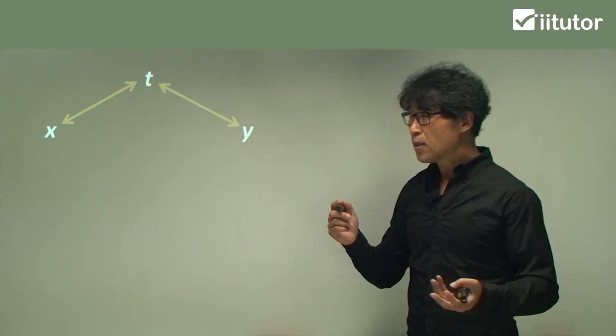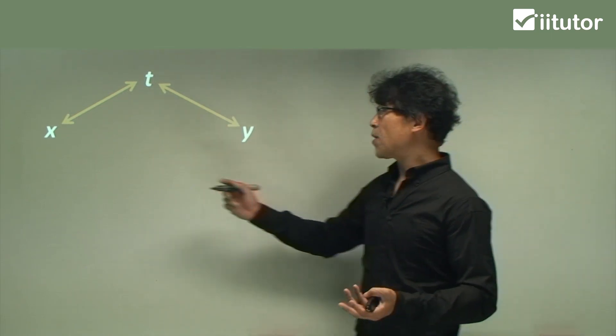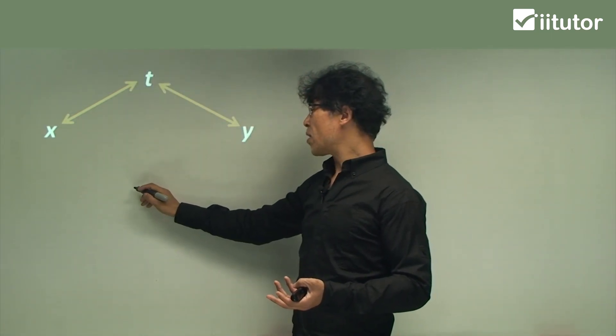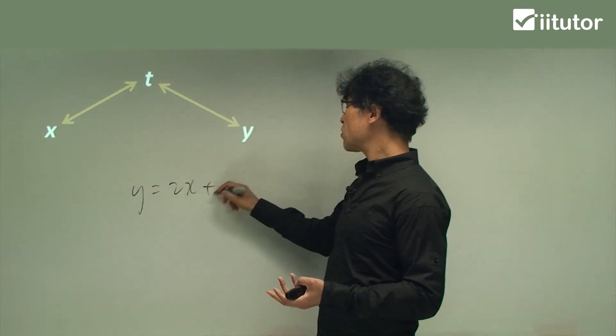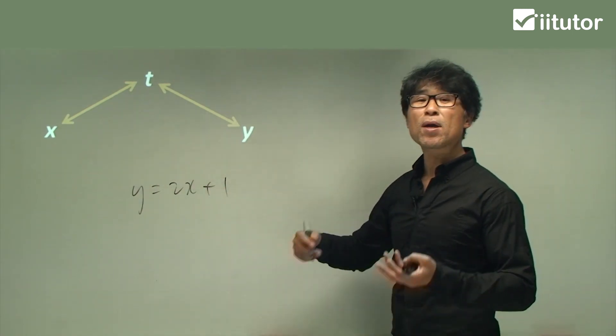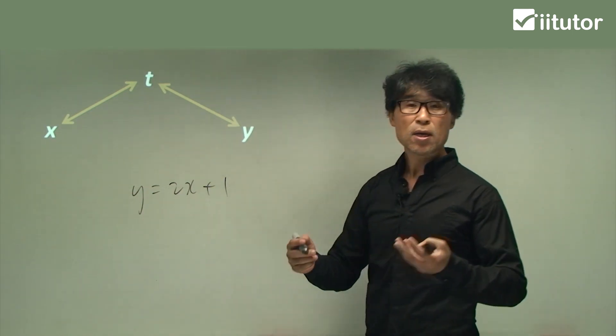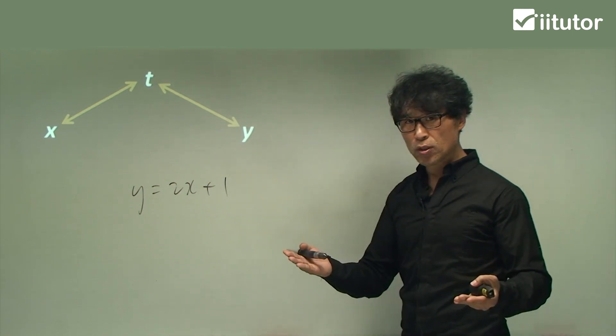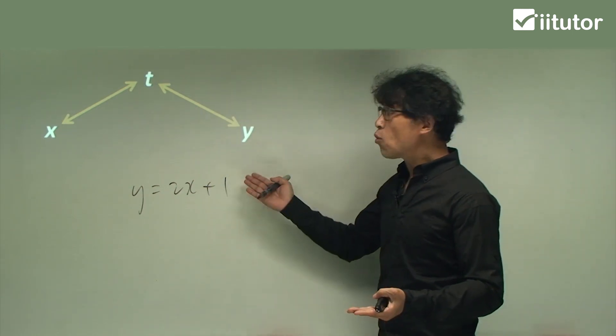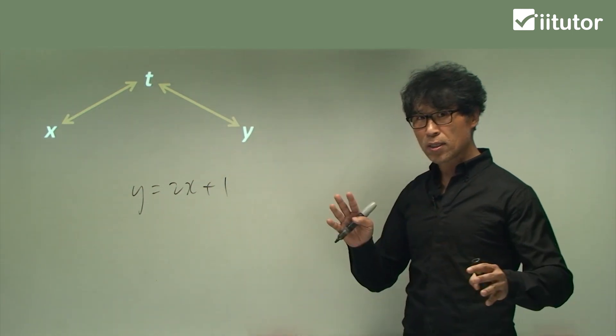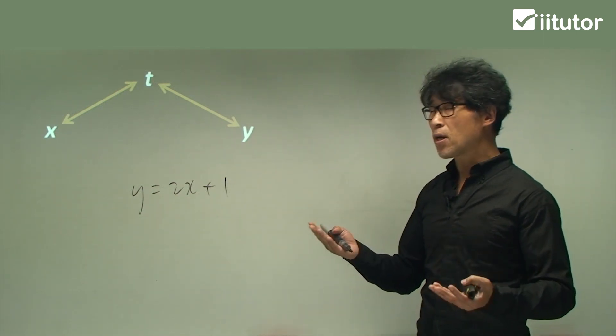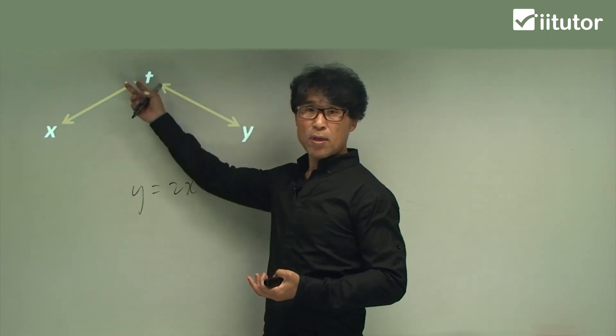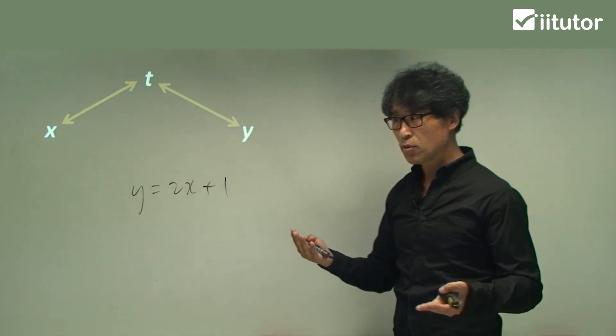So that's called parameter. Compared to the parameter, we don't need these parameters, then they can find the equation say y equals to 2x plus 1. So this is called Cartesian equation. There are two different things, parametric equation or Cartesian equation. The only thing that you can identify which one is which, if you have any letter rather than x, y and something else, that's parameter, parametric equation.